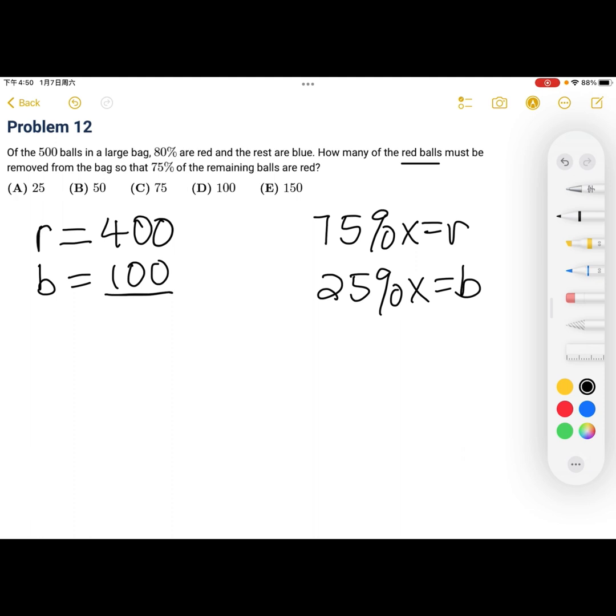So now we have this equation where we can solve for x. 25% of x is equal to 100, meaning x is equal to 400, which is our new total.